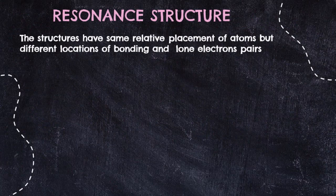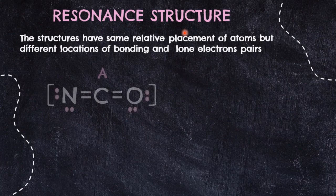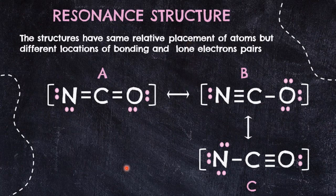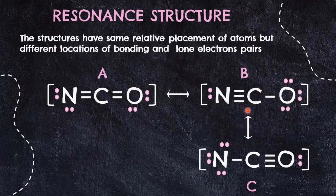NCO⁻ is an example of a molecule that cannot be represented accurately by only one Lewis structure because there are 3 in total. For any molecule that forms more than one Lewis structure, they are called resonance structures. Structure A is resonance with structure B, which is resonance with structure C. When showing resonance, include double-headed arrows between structures. Resonance structures have the same relative placement of atoms but different locations of bonding and lone electron pairs — we simply move the pi electrons from the multiple bonds.